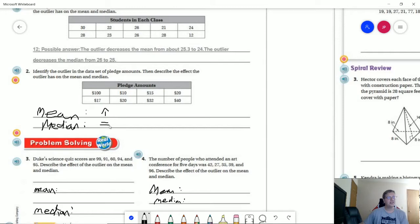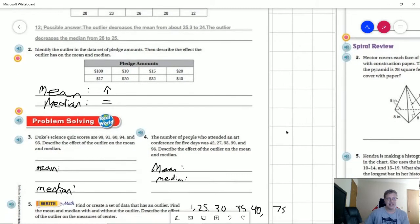So the median is actually going to stay the same because both of our values here in the middle are the same number. So we're not going to have any change there.